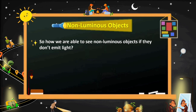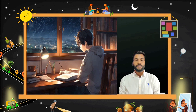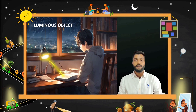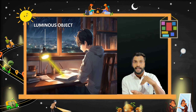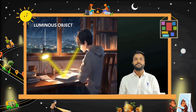But how are we able to see non-luminous objects if they don't emit their own light? Let's understand this with an example. As you can see in this picture, this person is able to see and read the book. On the table, there is a light lamp. When light rays from the lamp come to the book's surface, the book's surface reflects the light radiation directly into our eyes. That's why we are able to see the book and read it. This is how light travels and reflects off other surfaces.